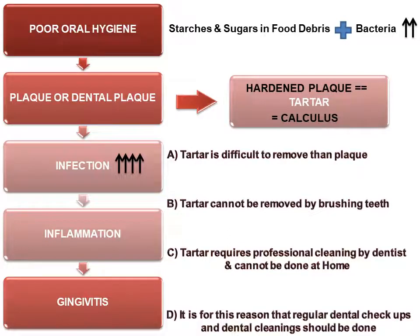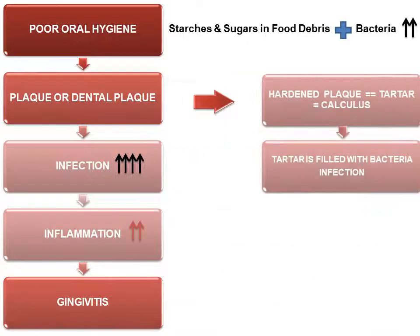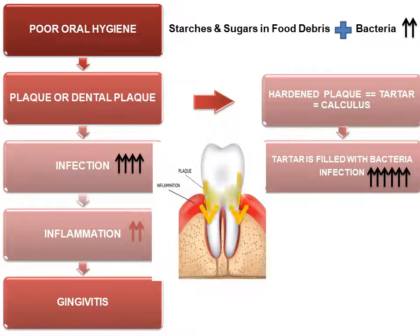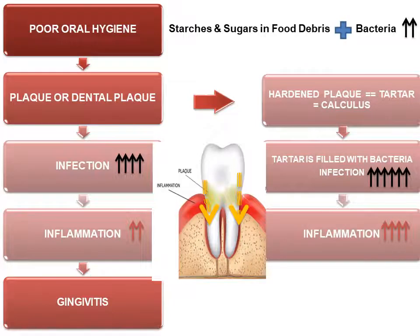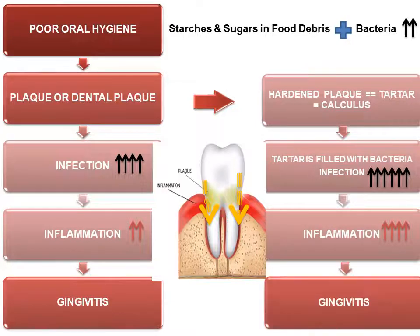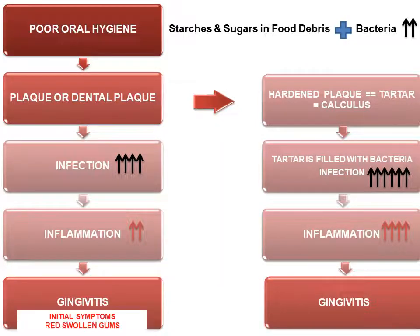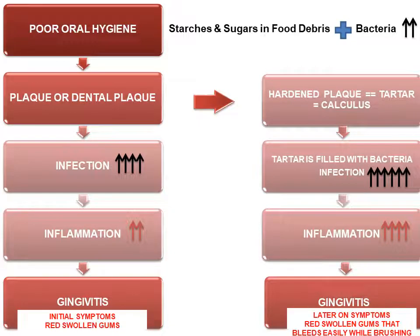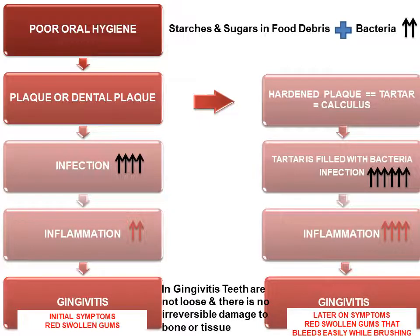Tartar cannot be removed by brushing; it requires professional cleaning by a dentist and cannot be done at home. This is why regular dental checkups and cleanings should be done. Tartar is filled with bacteria and encourages more bacterial growth along the gum line toward the root of the tooth, leading to more inflammation — gingivitis. Now symptoms include red, swollen gums that bleed easily while brushing. In gingivitis, teeth are not loose and there is no irreversible damage to the bone or tissue.